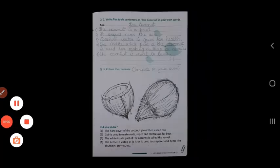Third point. The white inside part of the coconut is called the kernel. So when you break the coconut inside the color is white and it is hard. This is the part which mummy uses for making chutney and curries. This white part is called the kernel.